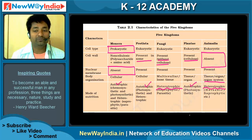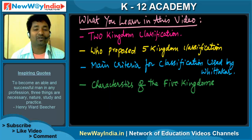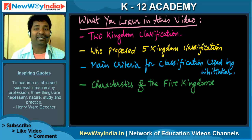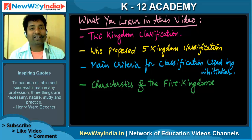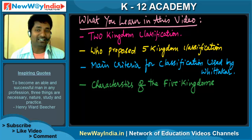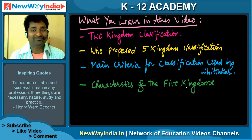Try to memorize this chart as it will help you in competitive exams and answering many questions. The key topics covered are: the five kingdom classification, the criteria Whittaker used, and the characteristics of the five kingdoms — Monera, Protista, Fungi, Plantae, and Animalia. Remember: animals have no cell wall, and Monera are prokaryotes. See you in the next video. Thank you so much — please subscribe, like, comment, and share.